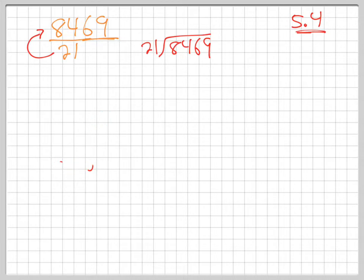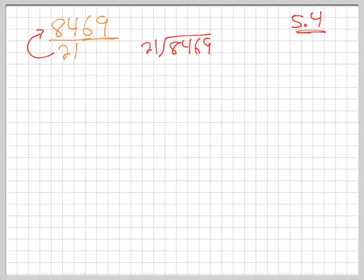So how do we carry that out? What are the steps involved in putting 21 into 8,469? Do you look at the whole 8,469 and just think, how many 21s? No, we don't think about the whole 8,469. We just look at the front — just the 21 into the 84. We say, what could I put up here? How many times will 21 go into 84?